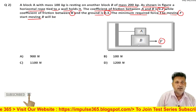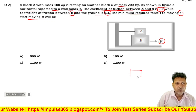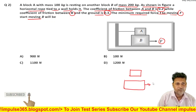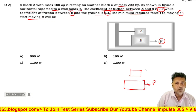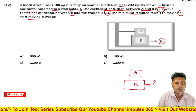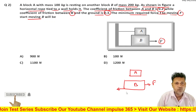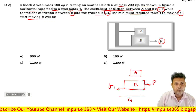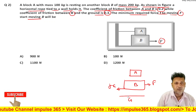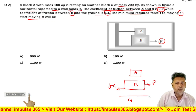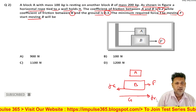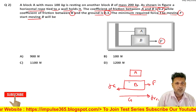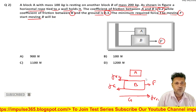तो सबसे पहली बात, अगर मैं एक figure बनाऊ, छोटा सा, और separate figure बनाऊ। अगर आप force इधर लगा रहे हो, तो B का intention of motion right side में है। तो friction force जो ground लगाएगा, FR1 इसको कह देते हैं, वो back side लगाएगा।